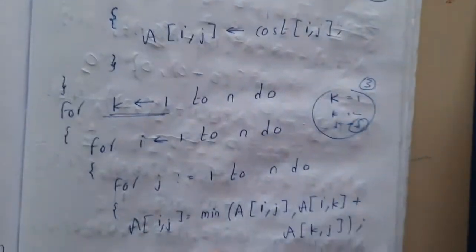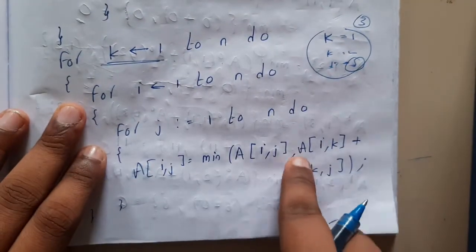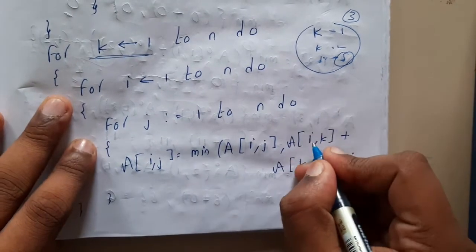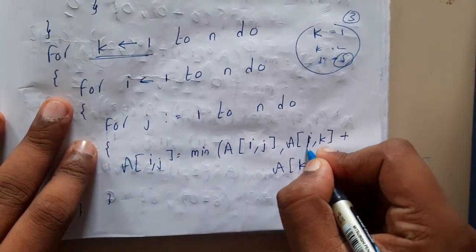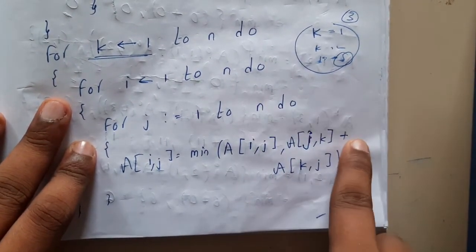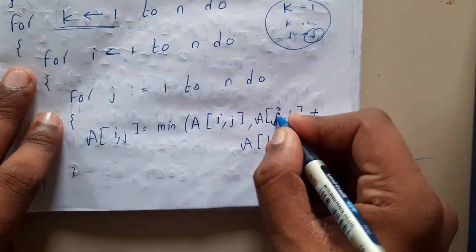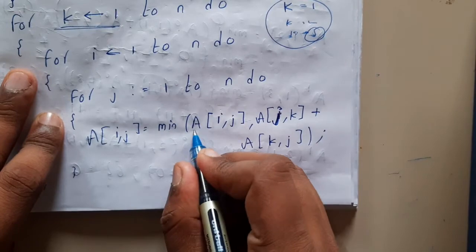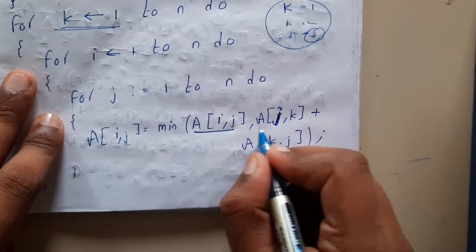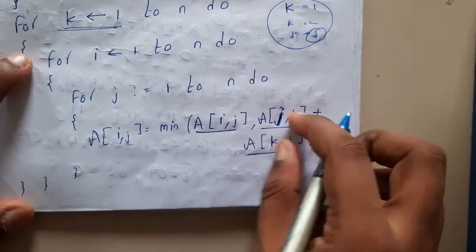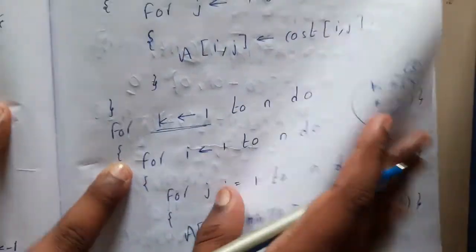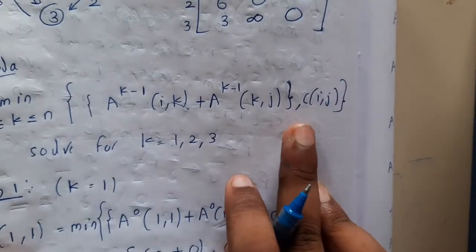The formula applied inside the loops is: A[i,j] = A[i,k] + A[k,j]. That is the operation — the same formula we derived. Based on this single formula only, you write the entire algorithm. There is nothing much beyond this.